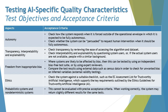The next aspect is autonomy, which has several relevant acceptance criteria: check how the system responds when it is forced outside of the operational envelope in which it is expected to be fully autonomous, and check whether the system can be persuaded to request human intervention when it should be fully autonomous. If a system is claimed to be fully autonomous and not require human intervention, you should verify the AI-based system is not incorrectly prompting humans to interfere.